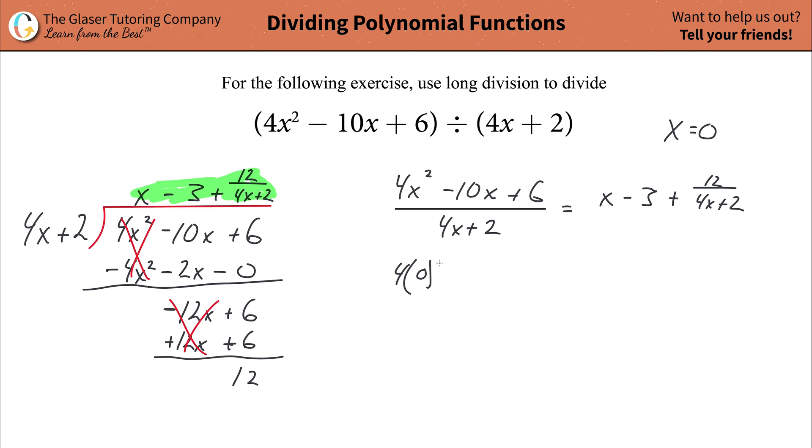Then divide that by the 4x plus 2. And that's going to be equal to the quotient you came up with earlier, which is x minus 3 plus 12 over 4x plus 2. Now I know this looks like a complicated mess, but don't worry about it. You're going to plug in any old x value you want. I kind of like to shy away from 0, although a 0 should work. Why don't we try 0? So you're going to plug in 4 times 0 squared minus 10 times 0 plus 6 divided by 4 times 0 plus 2. That's going to be equal to 0 minus 3 plus 12 over 4 times 0 plus 2.